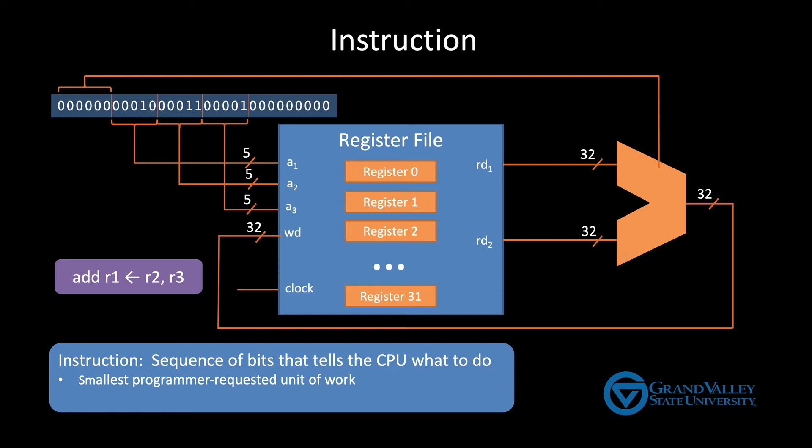Now second, although it might be tempting to think of an instruction as a single line of source code, most lines of C or Java code get compiled into several machine instructions. We'll see many examples of this over the next couple weeks as we cover assembly language.